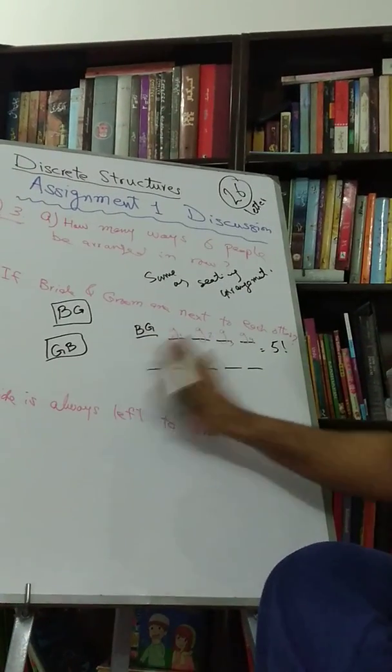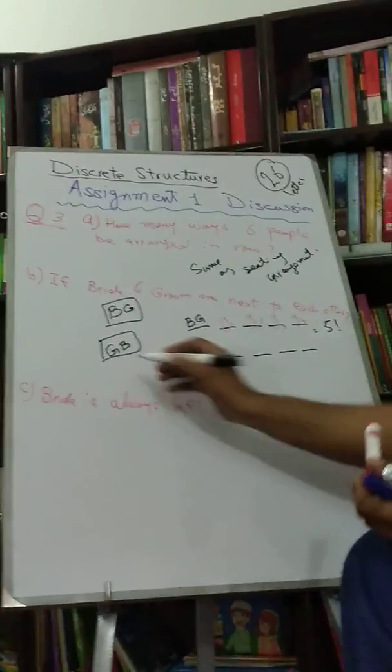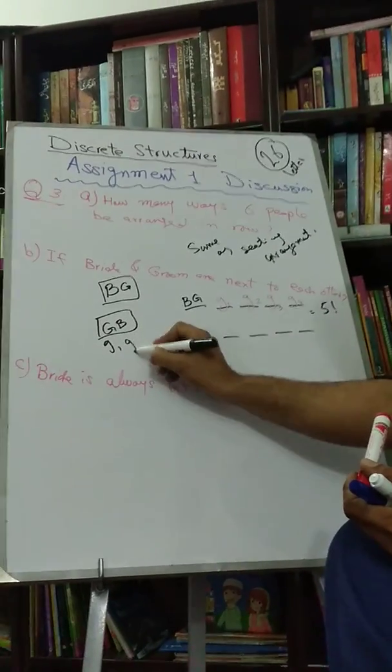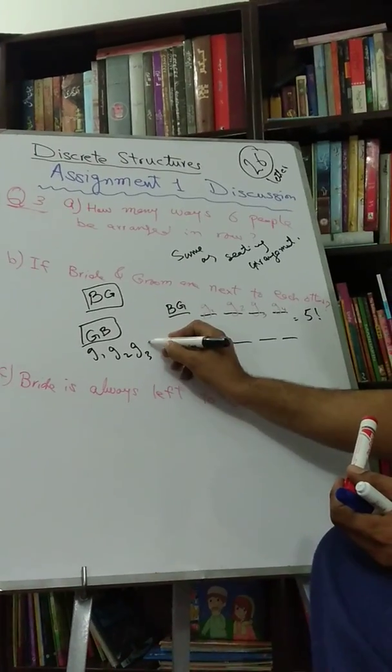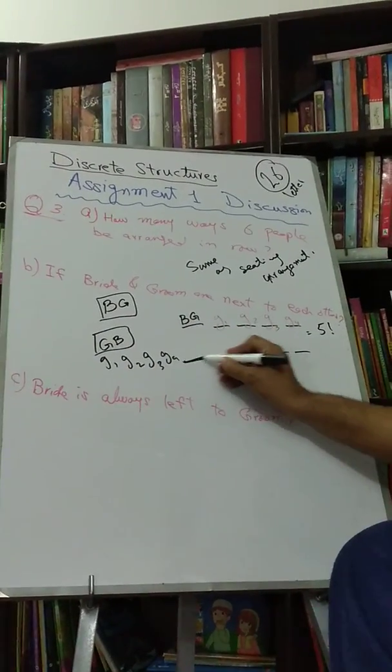So in other words, for the first position, we can have any of the GB or guest 1, guest 2, guest 3, guest 4. So among these five entities we can place any one of these here.